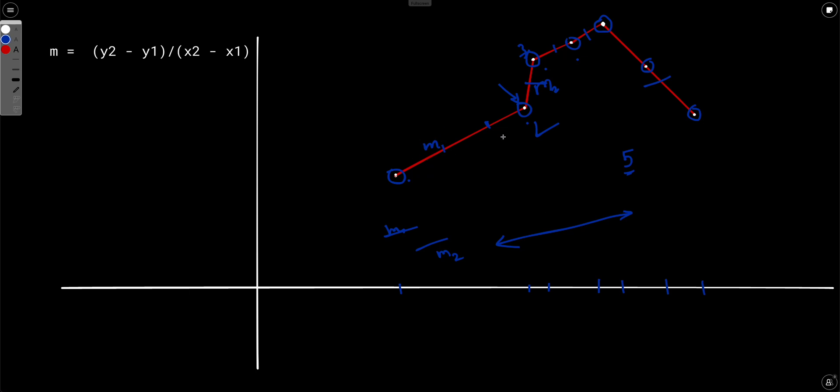We will find out the slopes of adjacent points. Let's say M1, M2, M3, M4, M5, M6. And now we will just see how many parts are there where the slopes are changing.